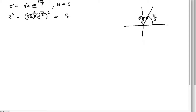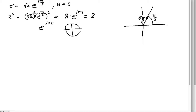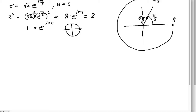Now, e^{i·2π} goes around the circle one complete time and comes back to where we started, so it equals 1. Therefore z^6 equals 8. We started at √2 and extended all the way out to 8, rotating all the way around until we land on 8 on the positive real axis.